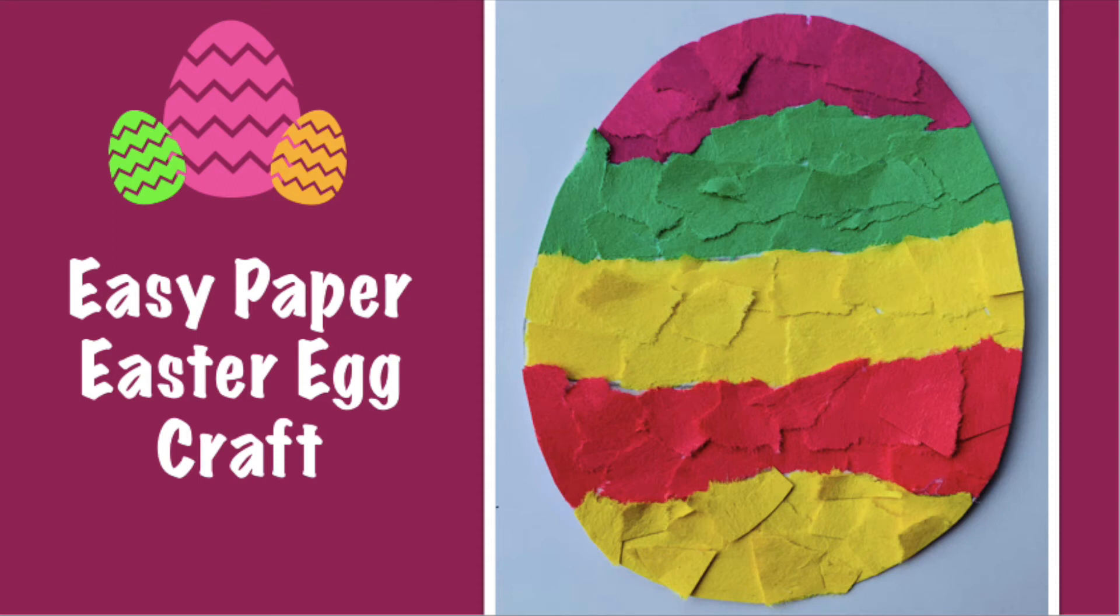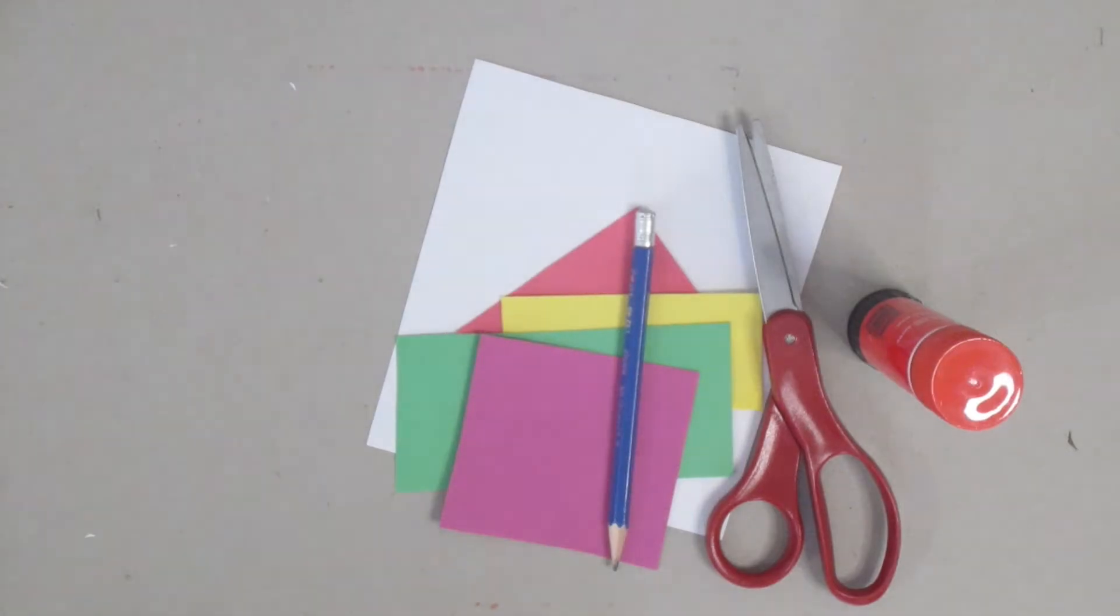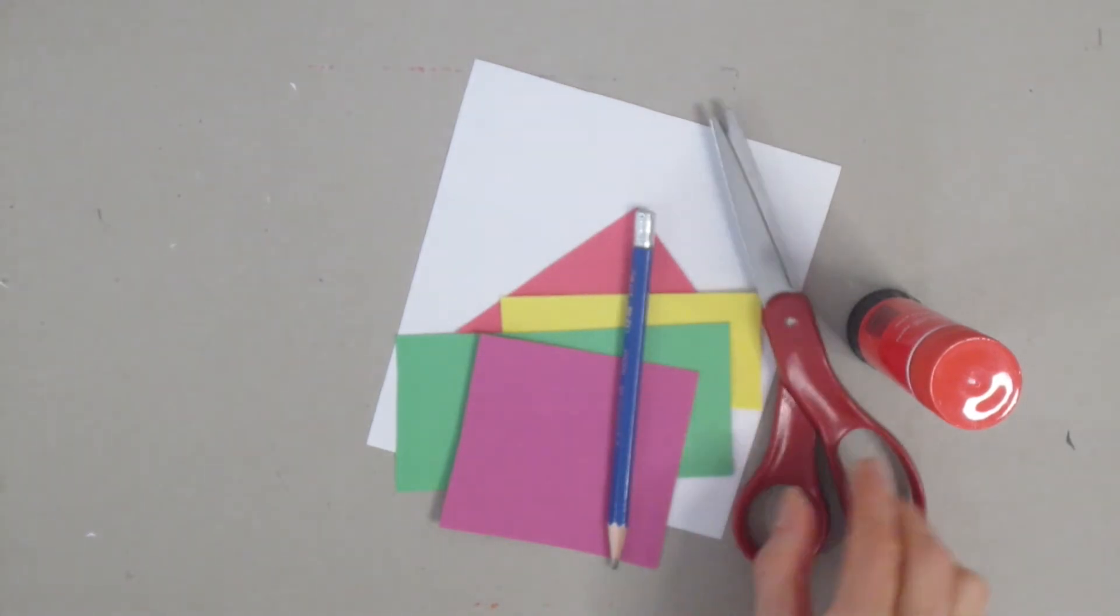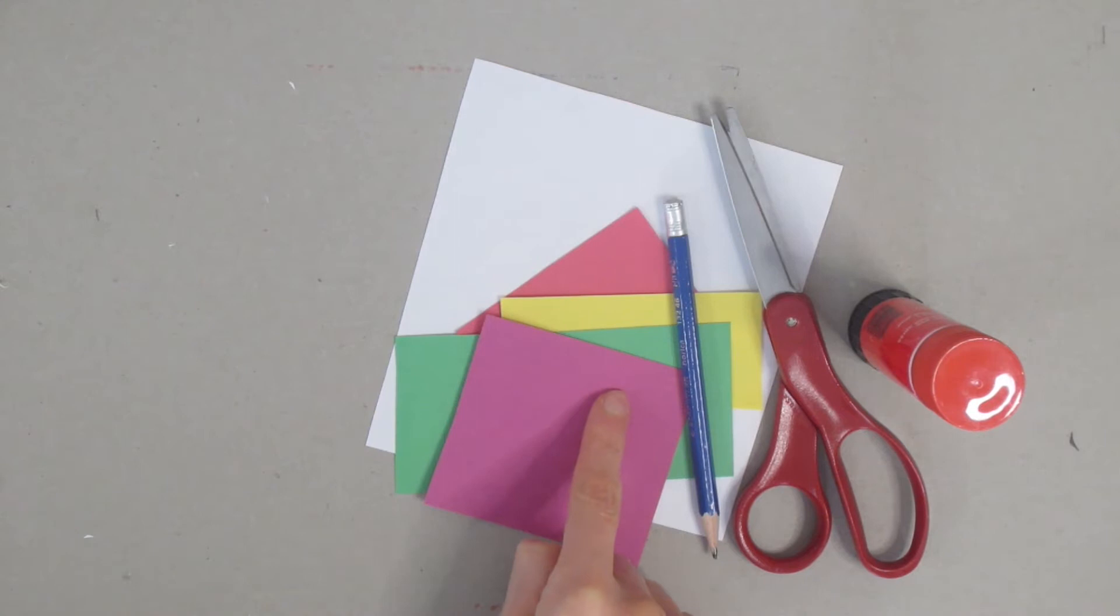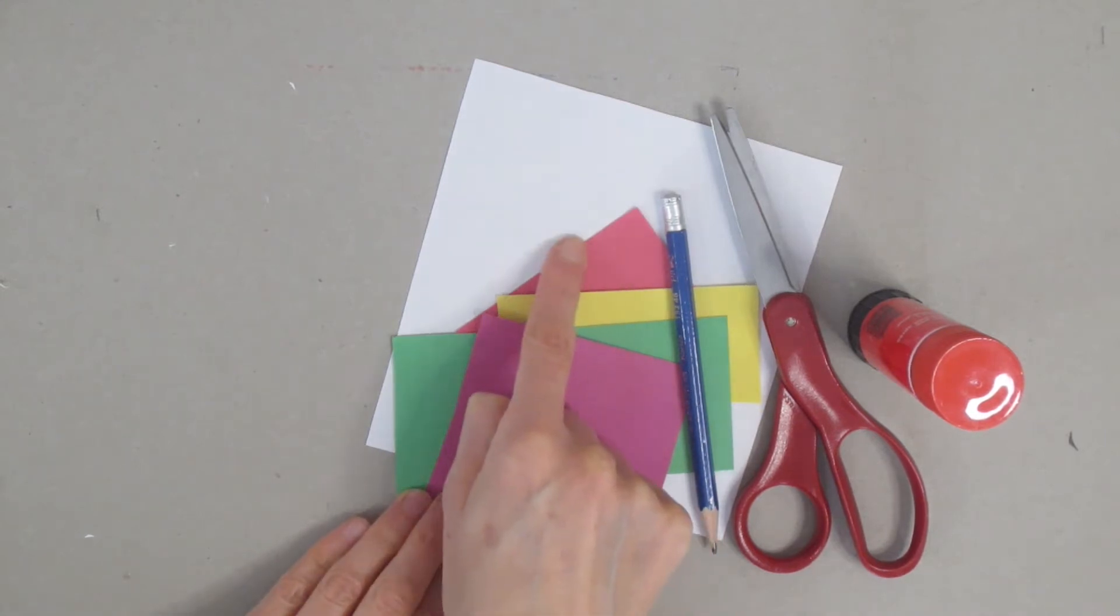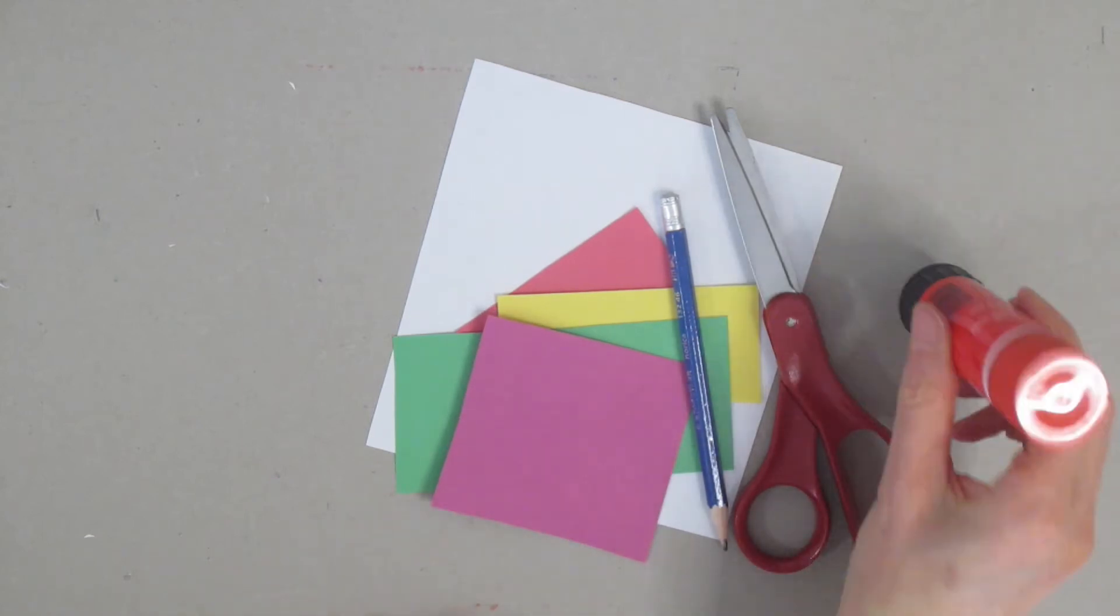Thank you for joining me to make this easy paper Easter egg craft. Today you're going to need some scissors, a pencil, some paper in a variety of different colors (I just have a small amount of each of my colors), a piece of white paper to draw our egg on, and some glue.